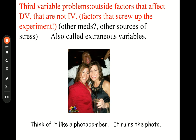Third variable problems are things that mess up your experiment that are not part of it — factors that affect the dependent variable but are not the independent variable. For example, if you want to find out if bananas cause constipation, a third variable problem would be something else that person ate, or how much water they drank. If one person drank a lot of water and another didn't, that could affect constipation — something outside the experiment that screws it up.